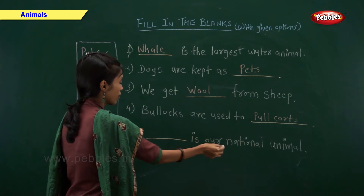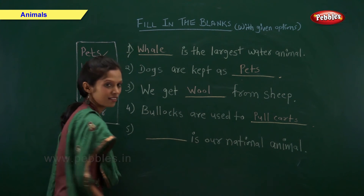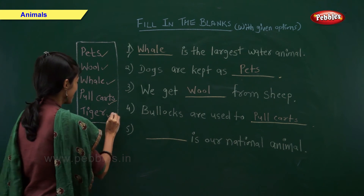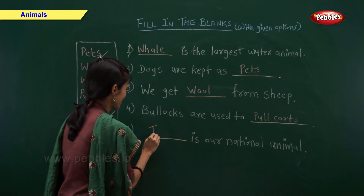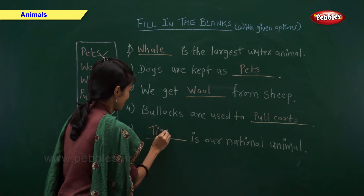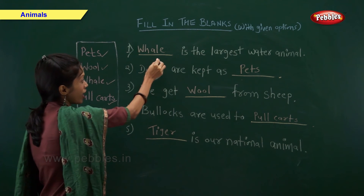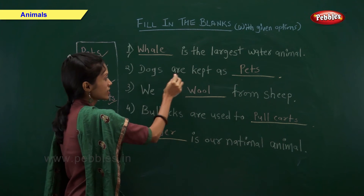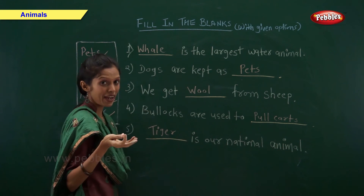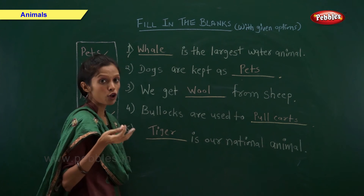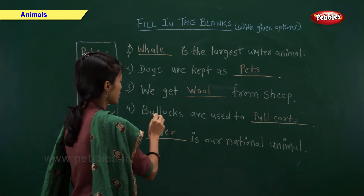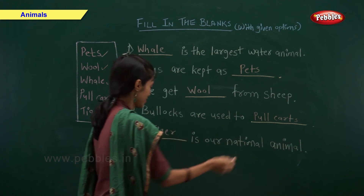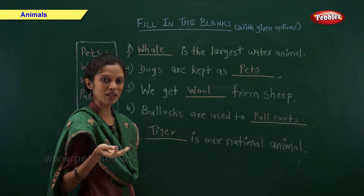Dash is our national animal — which is our national animal? Right, tiger. So, whale is the largest water animal. Dogs are kept as pets. We get wool from sheep. Bullocks are used to pull carts. And tiger is our national animal.